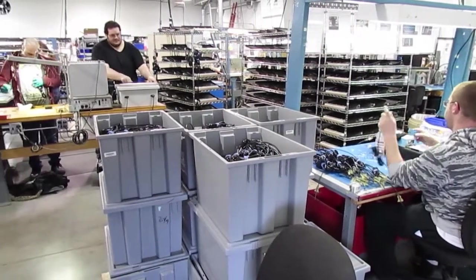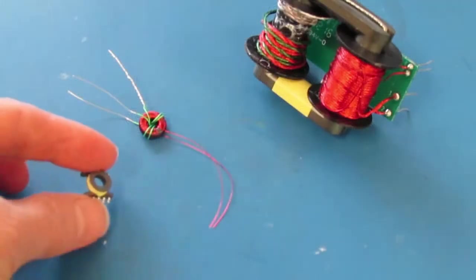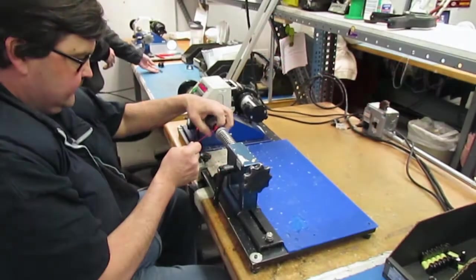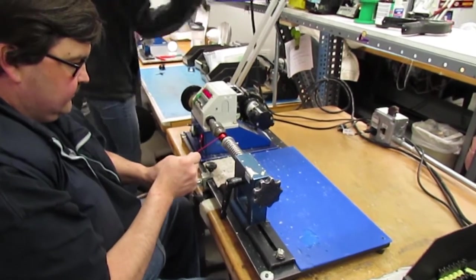Some, like cable and wire assembly, are pretty common among contract manufacturers. Others are more unusual, for example coil winding, to make custom inductors or transformers. Since custom power supplies are one of our specialties, we do a lot of this at Z-axis.